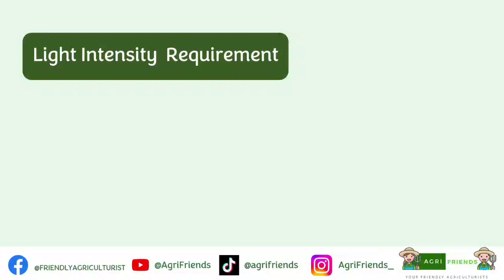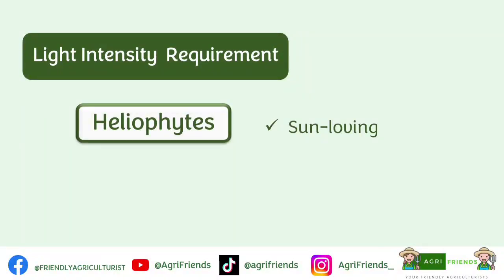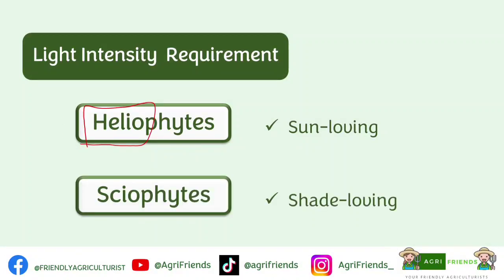Classification of crops based on light requirement. We have heliophytes, or sun-loving plants — 'helio' meaning sun — and sciophytes, or shade-loving plants, from the Greek word 'skia' meaning shade. Heliophytes normally have a light saturation of 5,000 foot-candles, while sciophytes have a light saturation of 500 foot-candles.